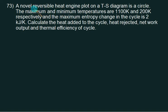A novel reversible heat engine plot on a T-S diagram is a circle with the maximum and minimum temperatures of 1100K and 200K. The maximum entropy change is 2 kilojoules per kelvin. Calculate the heat added to the cycle, heat rejected, network output, and thermal efficiency of cycle.